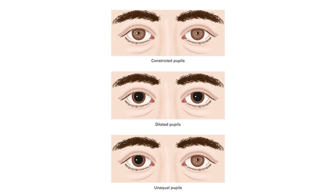Dilated pupils can indicate cardiac arrest or amphetamine use — stimulants like cocaine, crack, or crystal meth. Unequal pupils may be due to a stroke or trauma injury, where one pupil is blown and non-reactive while the other reacts normally. Check the eyes — they can tell you a lot.